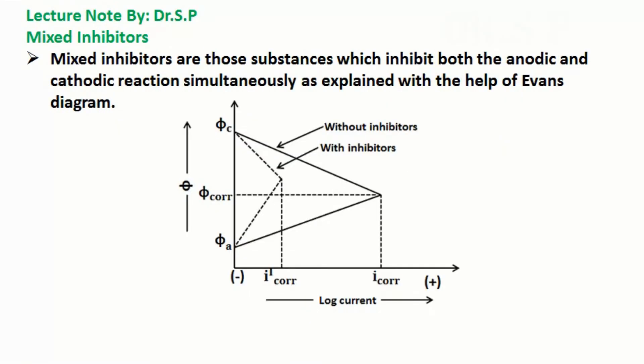Another type of inhibitors are mixed inhibitors. Mixed inhibitors are those substances which inhibit both the anodic and cathodic reactions simultaneously, as explained with the help of an Evans diagram.